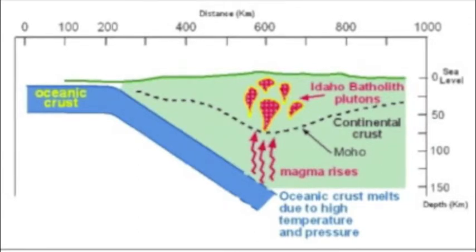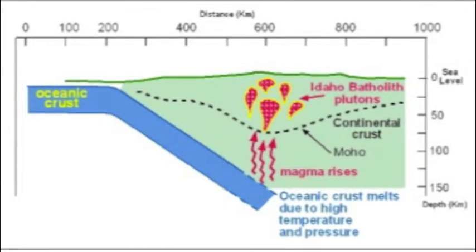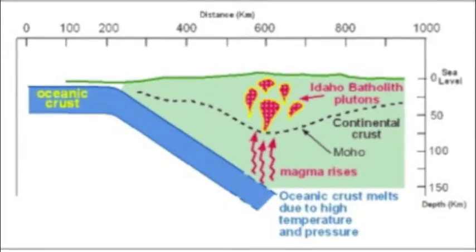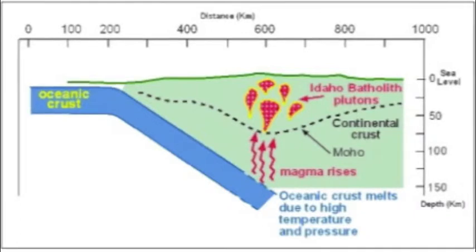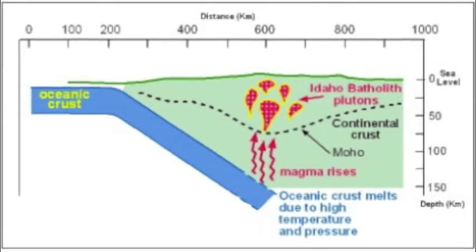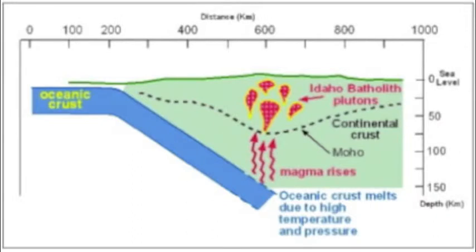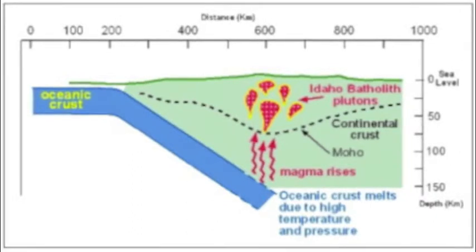During the formation of the Farallon plate, basaltic magma chambers formed, causing melting overlying rock into a granite composition. This crystallization formed various different types of rock types and textures. The rising magmatic plutons caused the uplift of large mountains at the top of the Earth's surface.